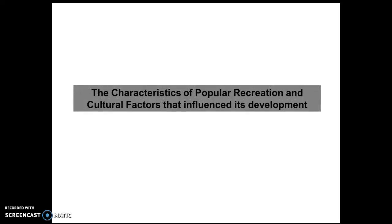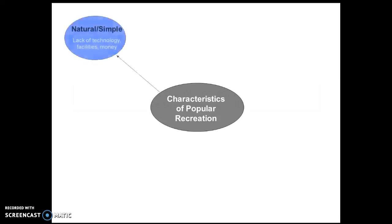I'm going to go through the characteristics — just make some Cornell notes on these. The first characteristic is that a lot of activities were natural and simple, requiring no facilities, technology, or money to take part in. Examples include bare-knuckle fighting, swimming in local ponds, and mob football — a pre-industrial version of football with very few rules, essentially anything goes. Ashbourne football is an example of mob football still played today. Activities were natural and simple due to a lack of technology, facilities, and money.